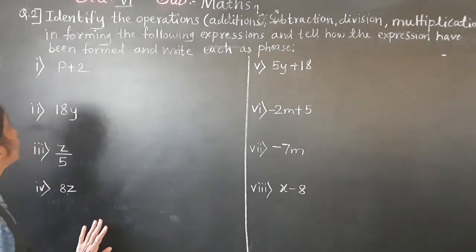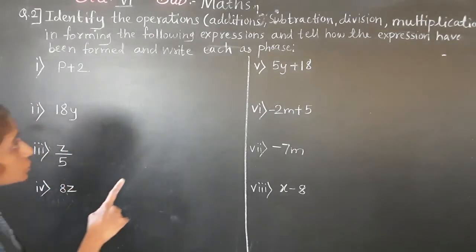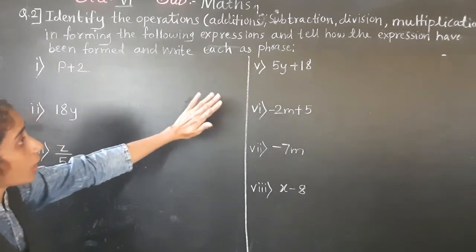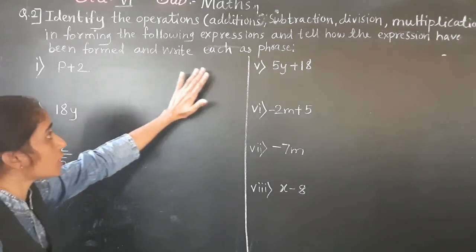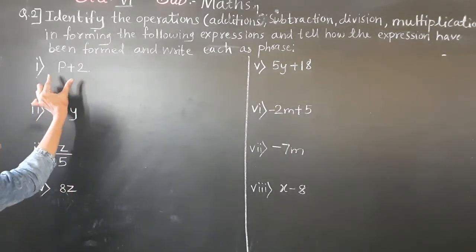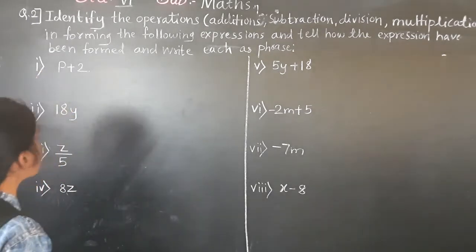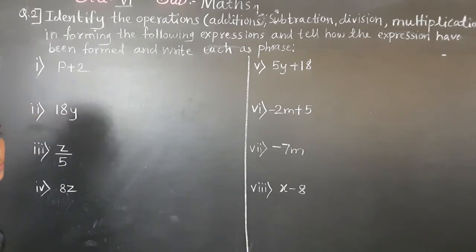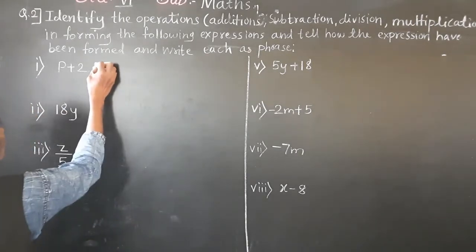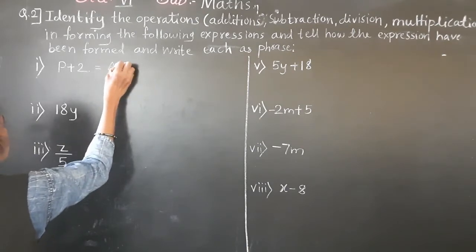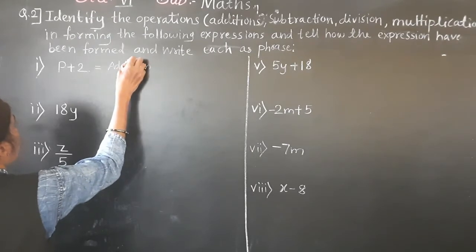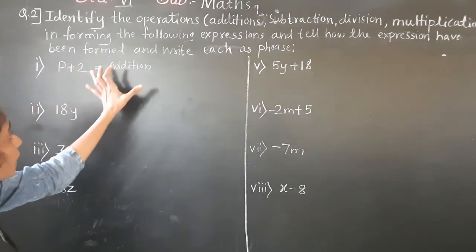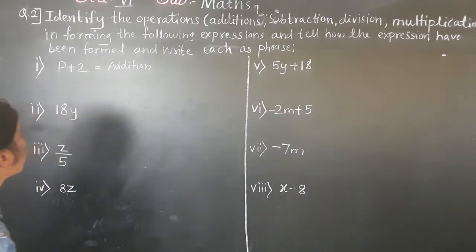Now let's solve question number 2: Identify the operations forming the following expressions and write each as a phrase. First: p plus 2 — the operation is addition. As a phrase: '2 more than p' or '2 is added to p.'